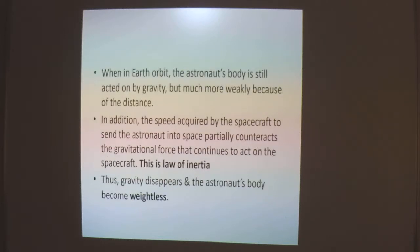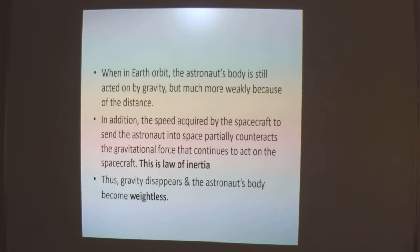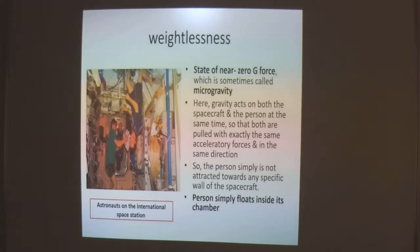When in Earth orbit, an astronaut's body is still acted on by gravity but much more weakly because of the distance. In addition, the speed acquired by the spacecraft to send an astronaut into space partially counteracts the gravitational force that continues to act on the spacecraft. This is the law of inertia. Thus gravity effectively disappears and the astronaut's body becomes weightless.